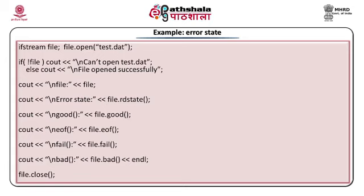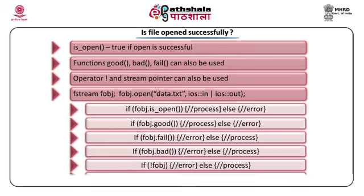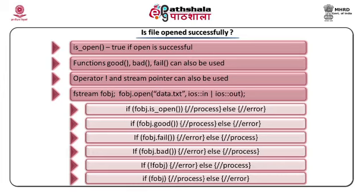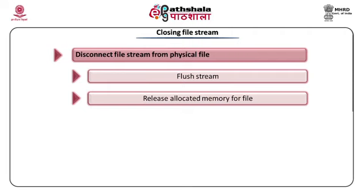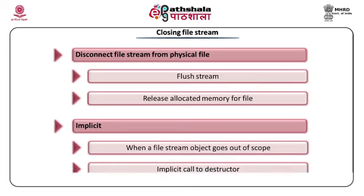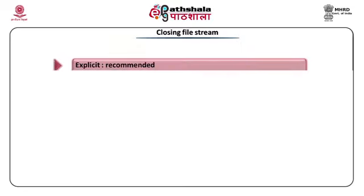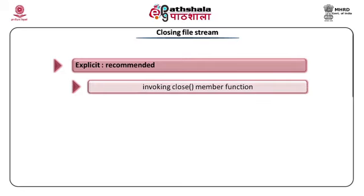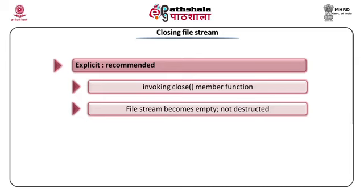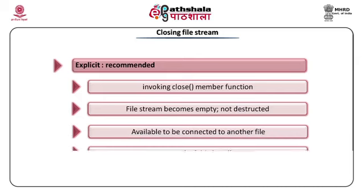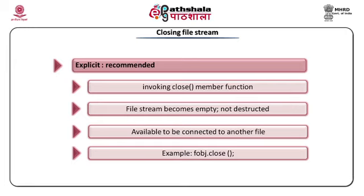Once working with a file is over, we should close it — it is equivalent to destroying the file stream object. When we destroy the file stream object, it flushes the stream and releases all allocated memory for other use. Closing a file can be done implicitly when the program terminates or when the file stream object goes out of scope — the destructor is called implicitly to close the file. Explicit closing is done by invoking the close() member function. When we close the file, the file stream becomes empty but is not destructed, so the stream object is still available to connect to another physical file.